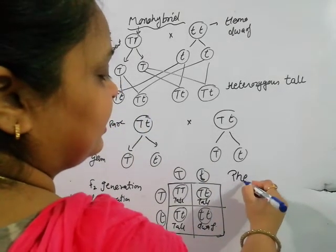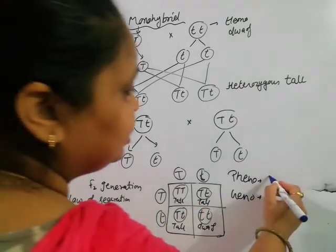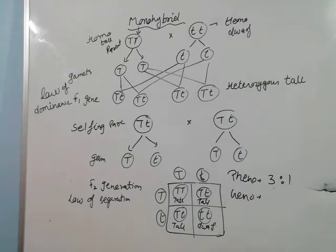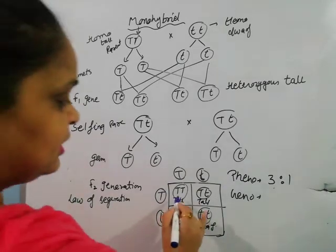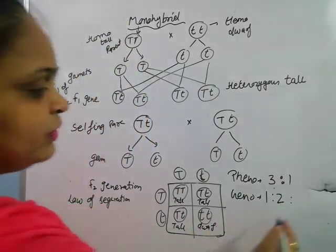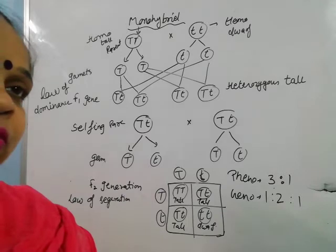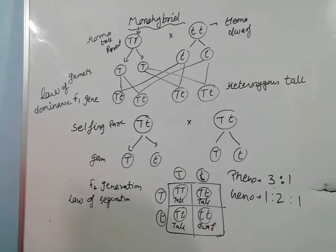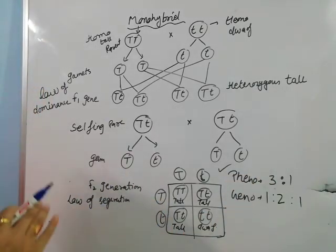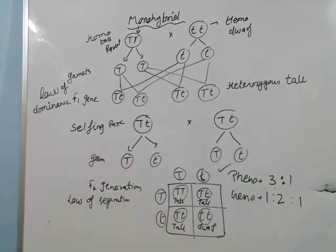You have two ratios: phenotype ratio and genotype ratio. The phenotype ratio is 3:1 — this is the phenotype ratio. In the genotype ratio, you can see how many are homozygous tall, how many are heterozygous tall, and how many are homozygous dwarf.